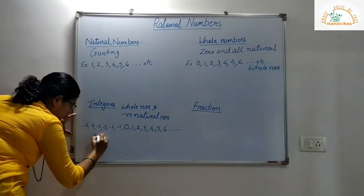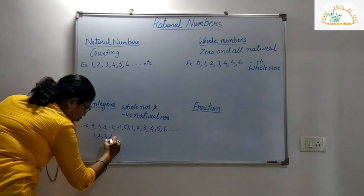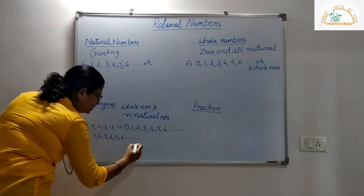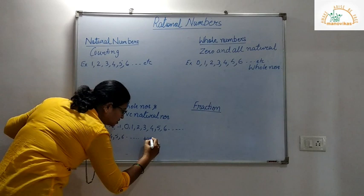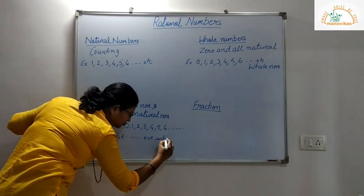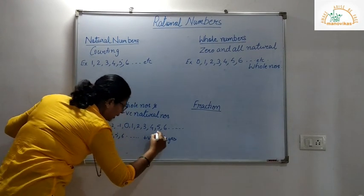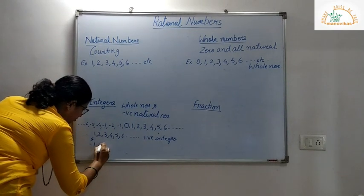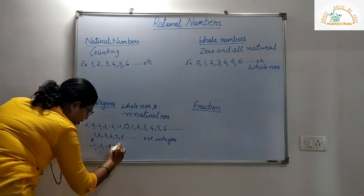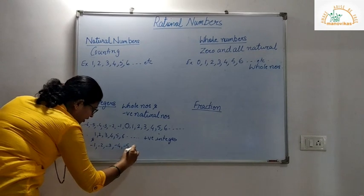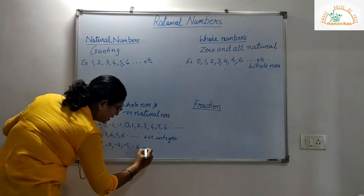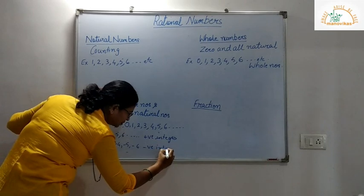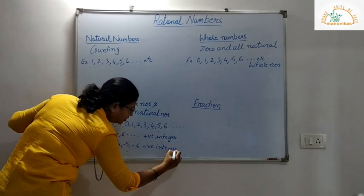1, 2, 3, 4, 5, 6 — all these are called as positive integers. And negative 1, negative 2, negative 3, negative 4, negative 5, negative 6 are called as negative integers.